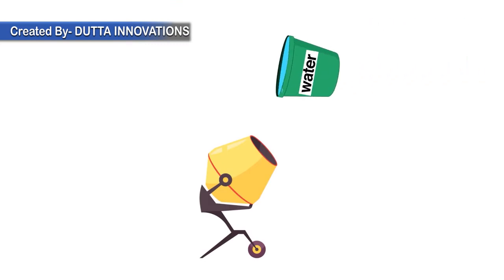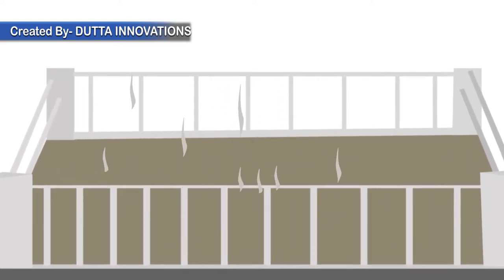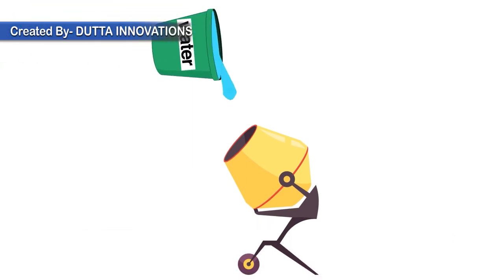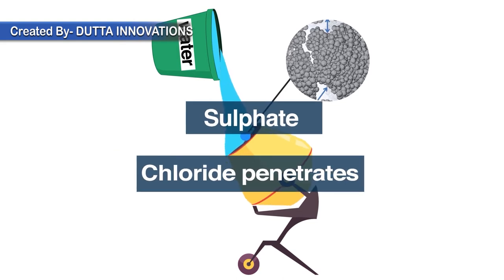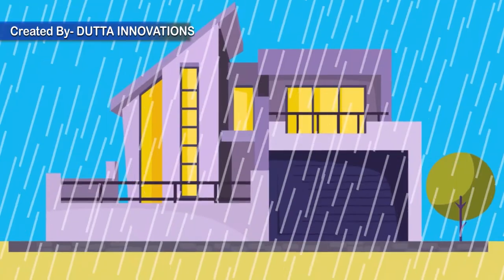Strength of concrete is related to the amount of water added in the mix. When water is increased by 10%, strength of concrete decreases by 20%. Addition of excess water results in formation of slurry, causing evaporation from the surface and leading to formation of permeable capillary pores. More water leads to more capillary pores through which harmful salts like sulphate and chloride penetrate, making the concrete less durable and highly permeable — resulting in porous concrete with leakage and seepage, especially during rainy days.